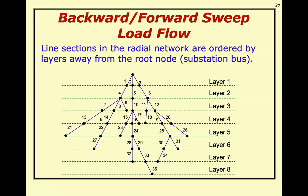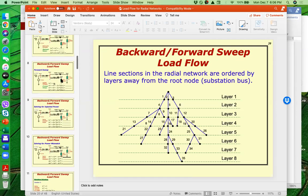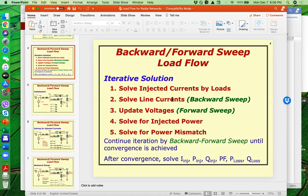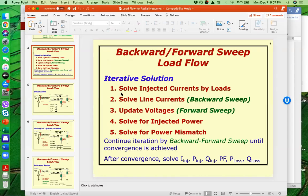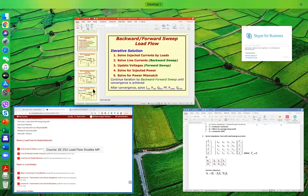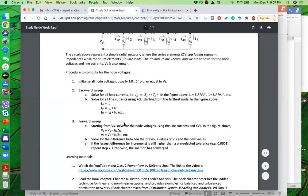The method we can use to solve for the voltage in a distribution network is the backward-forward sweep. It is an iterative process. We start with the backward sweep, which involves computation of the currents, and then the forward sweep, in which we solve for the voltages. I will also give you the procedure for the backward-forward sweep from the study guide.